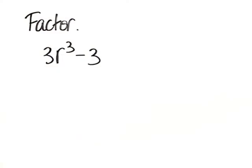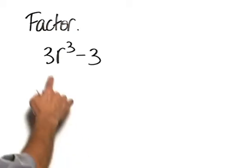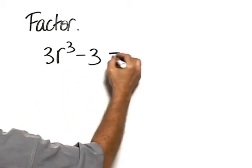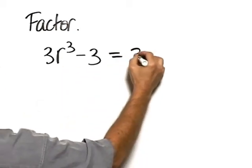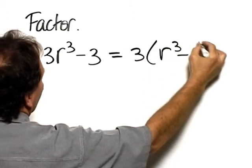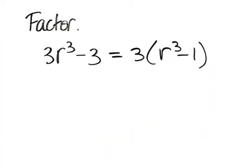Factor 3r cubed minus 3. The first thing you should notice is that they have a common factor of 3, and we start by factoring out the common factor of 3, so we have 3 times the quantity r cubed minus 1.